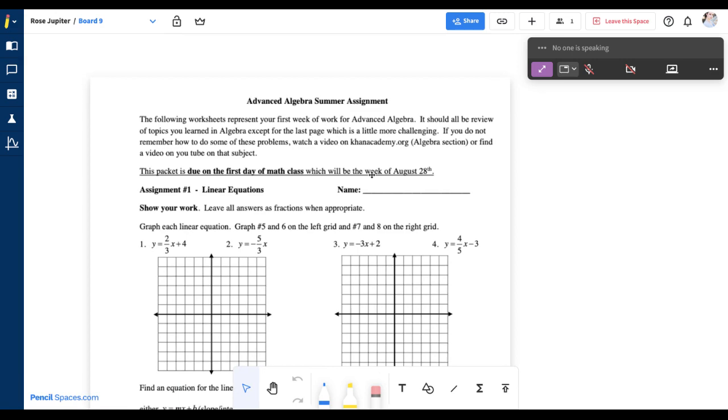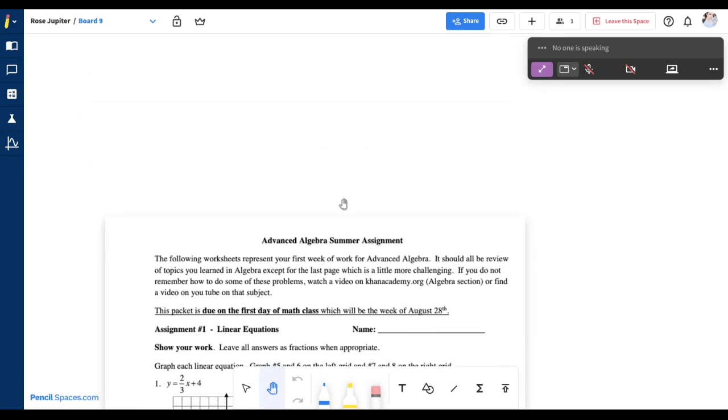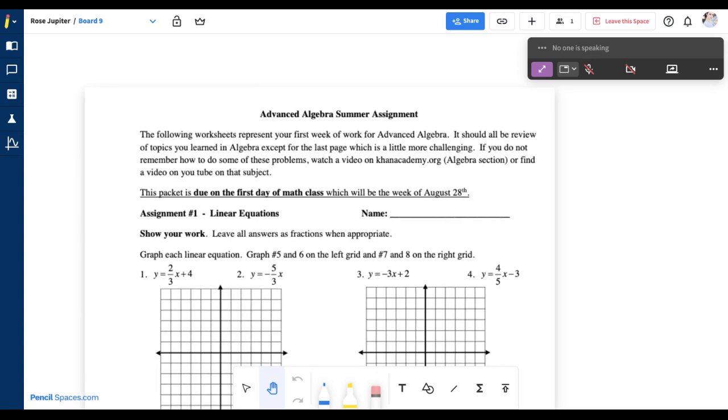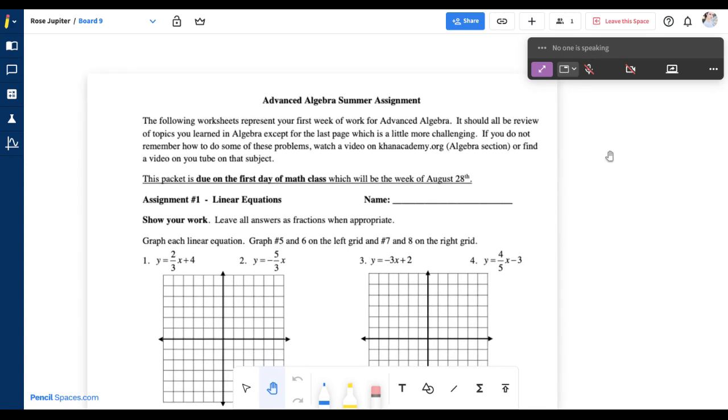Whenever you load a PDF, you can use the panning tool. If you want to bring any of your participants to the exact board that you're on, as well as the exact view part that you're in, you can click Leader Mode or the crown icon at the top left corner.